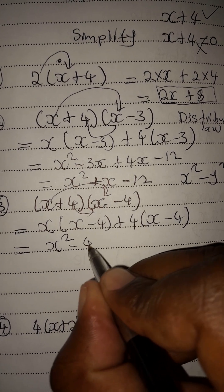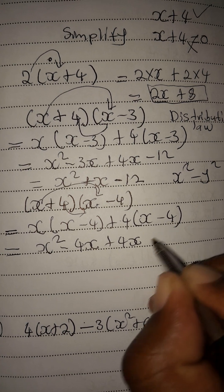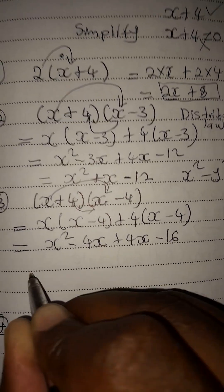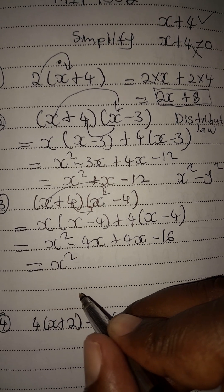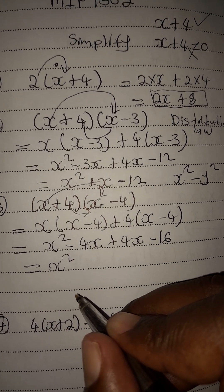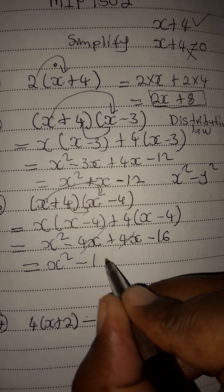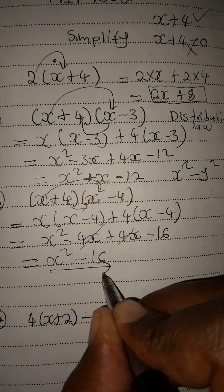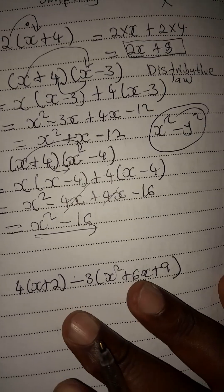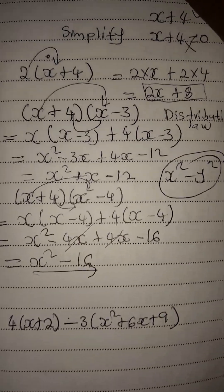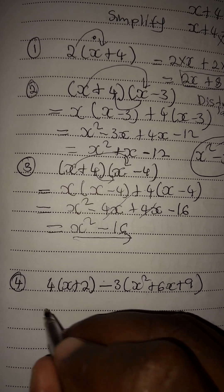x times negative 4 is minus 4x, 4 times x is 4x, and 4 times negative 4 is minus 16. So we have x squared, and negative 4x plus 4x equals zero — they cancel. We are left with x squared minus 16. This is what we call a difference of two squares. You will learn more when we do factorization.